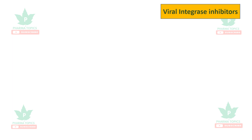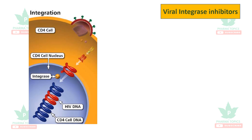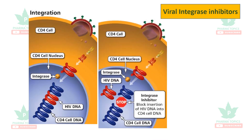Next are the viral integrase inhibitors. When viral DNA is formed from reverse transcriptase, it must integrate with the host DNA or CD4 cell DNA. This step is blocked by the integrase inhibitors, which block the insertion of HIV DNA into the CD4 cell DNA.